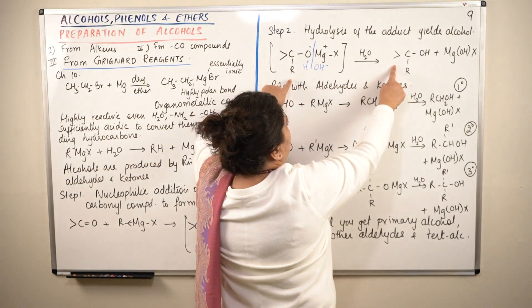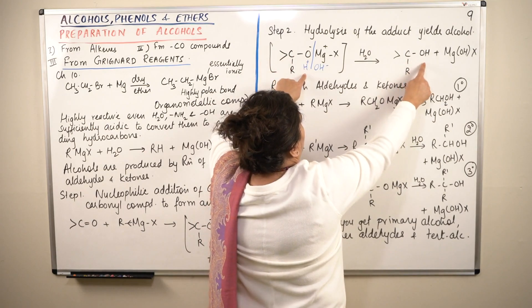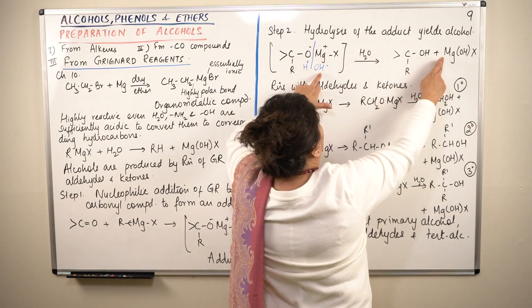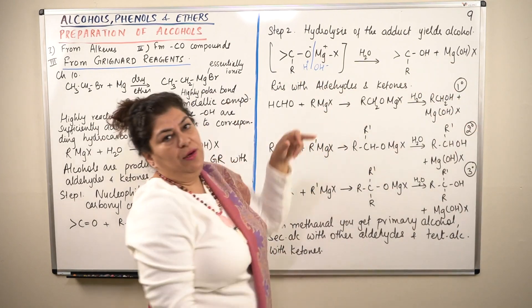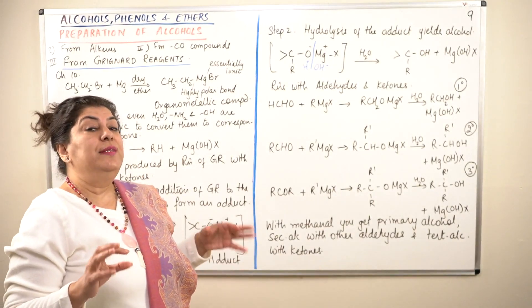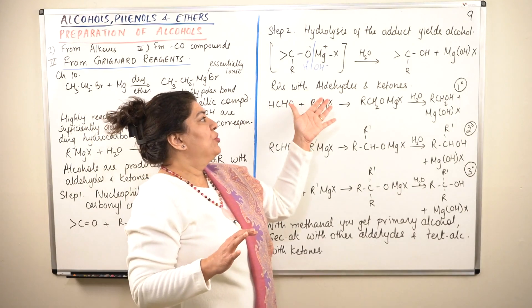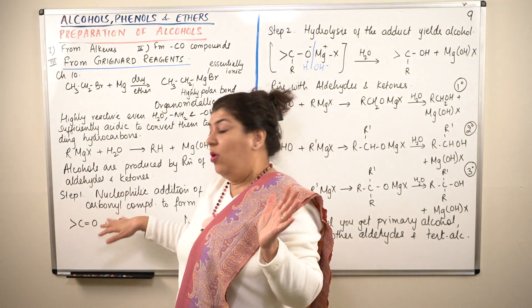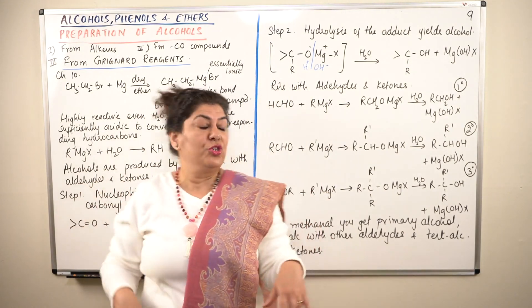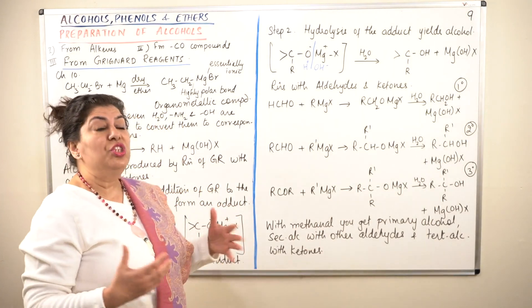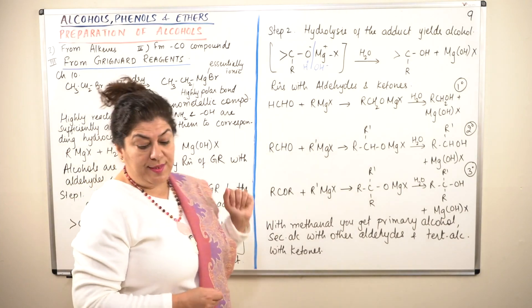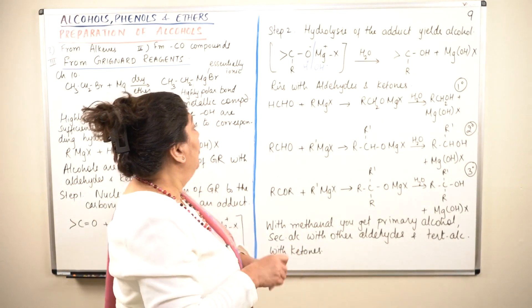After hydrolysis, R remains attached to the carbon, and you get R-C with an OH group — that is the alcohol. Magnesium gets OH and it already has the halogen, so you get MgOHX as the by-product. This is the general reaction by which alcohols are prepared from carbonyl compounds — both aldehydes and ketones.